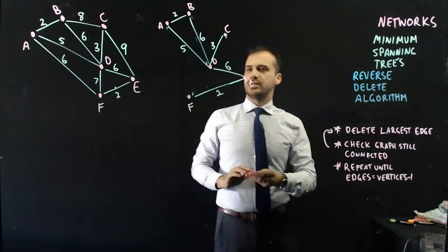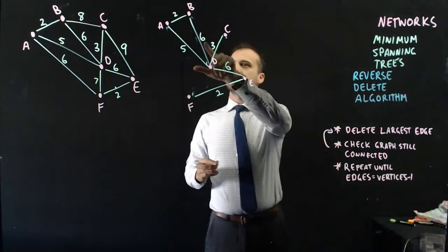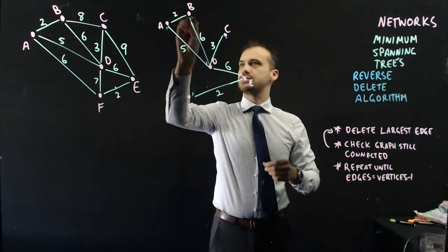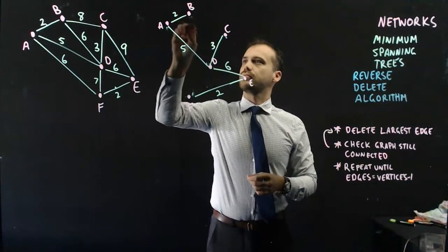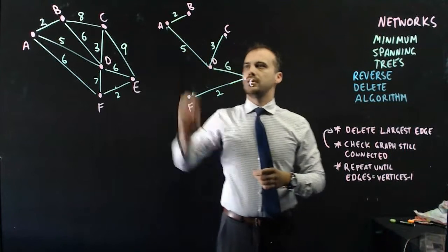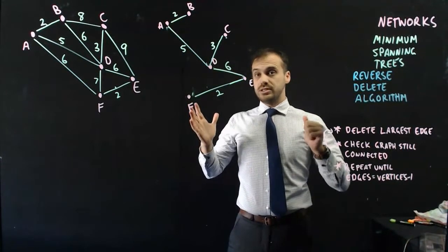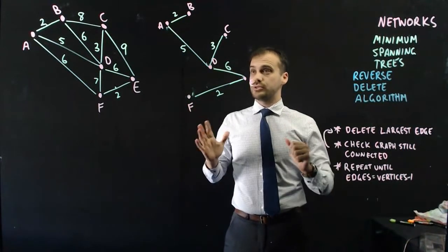Okay, let's find another large edge and delete that. Six. Can I delete this six? Okay. Everything's still connected? Okay. Looks good so far.